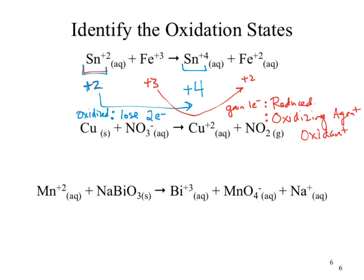Where did iron gain that electron from? Tin. So it caused tin to be oxidized. Our iron 3+ is also known as an oxidizing agent or oxidant, because it caused our tin to be oxidized. And our tin forced iron to take those two electrons — forced iron to be reduced. So our tin is a reducing agent or reductant. What we're trying to do is evaluate how these things changed and then apply the definitions back to them. To be able to apply them, you need to know the definitions.